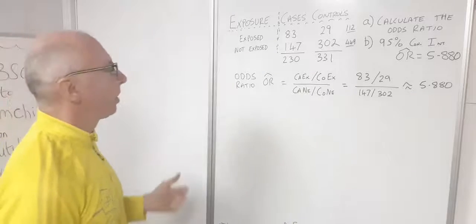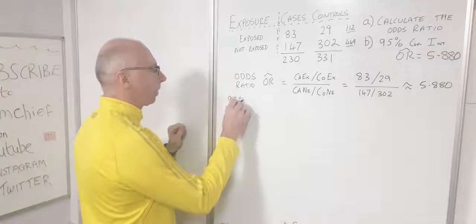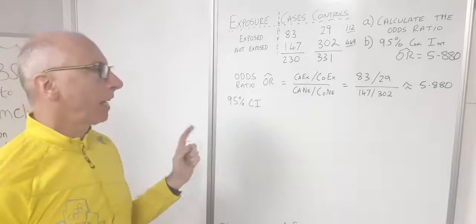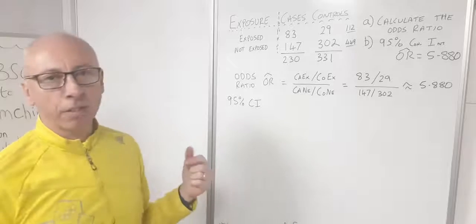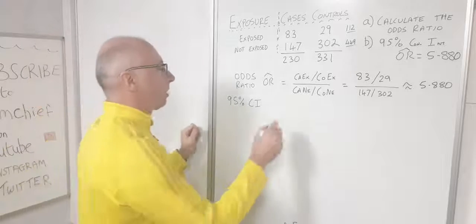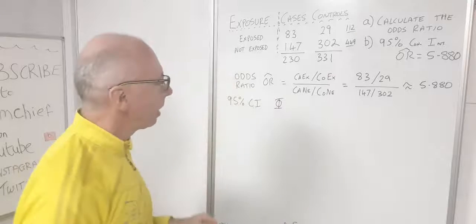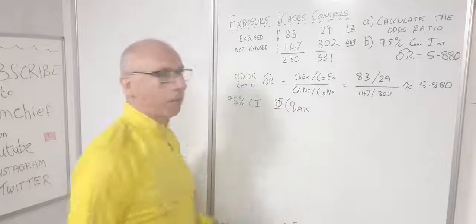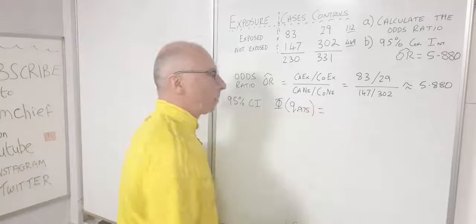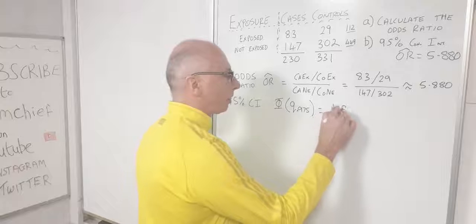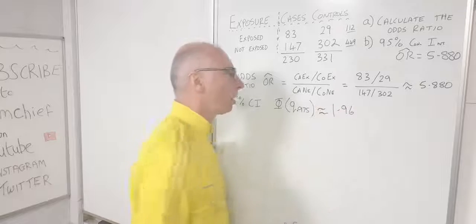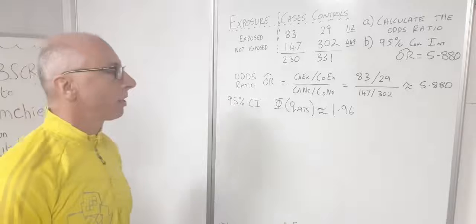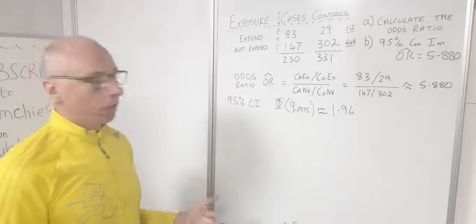Now we want to calculate a 95% confidence interval to see if there's any discrepancy in this value. Since this is a two-tailed calculation, we want our quantile at 0.975, so our z-value from the normal distribution tables is approximately 1.96.